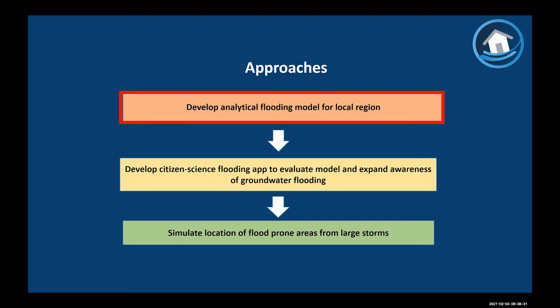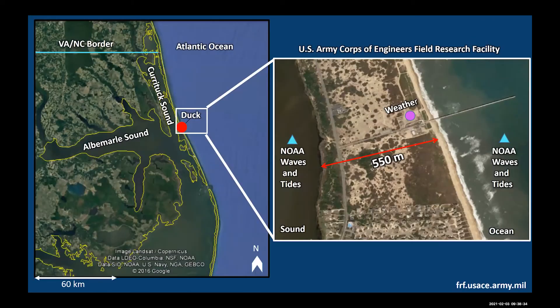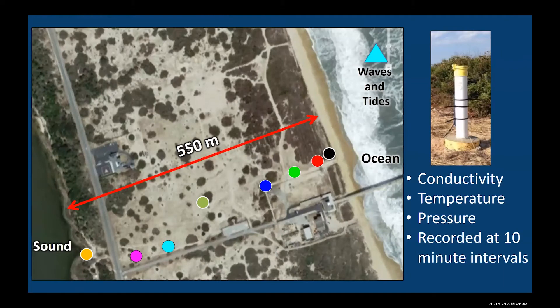We are using observations collected at the U.S. Army Corps of Engineers Field Research Facility in Duck, which has long-term measurements of wave and tide both in the sound and the ocean, plus a weather station that collects precipitation data. In September 2014, we installed a transect of groundwater wells extending all the way across the island. Every colored circle in the aerial image represents a groundwater well that measures conductivity, temperature, and pressure at 10-minute intervals, enabling us to connect changes in groundwater levels to ocean conditions.